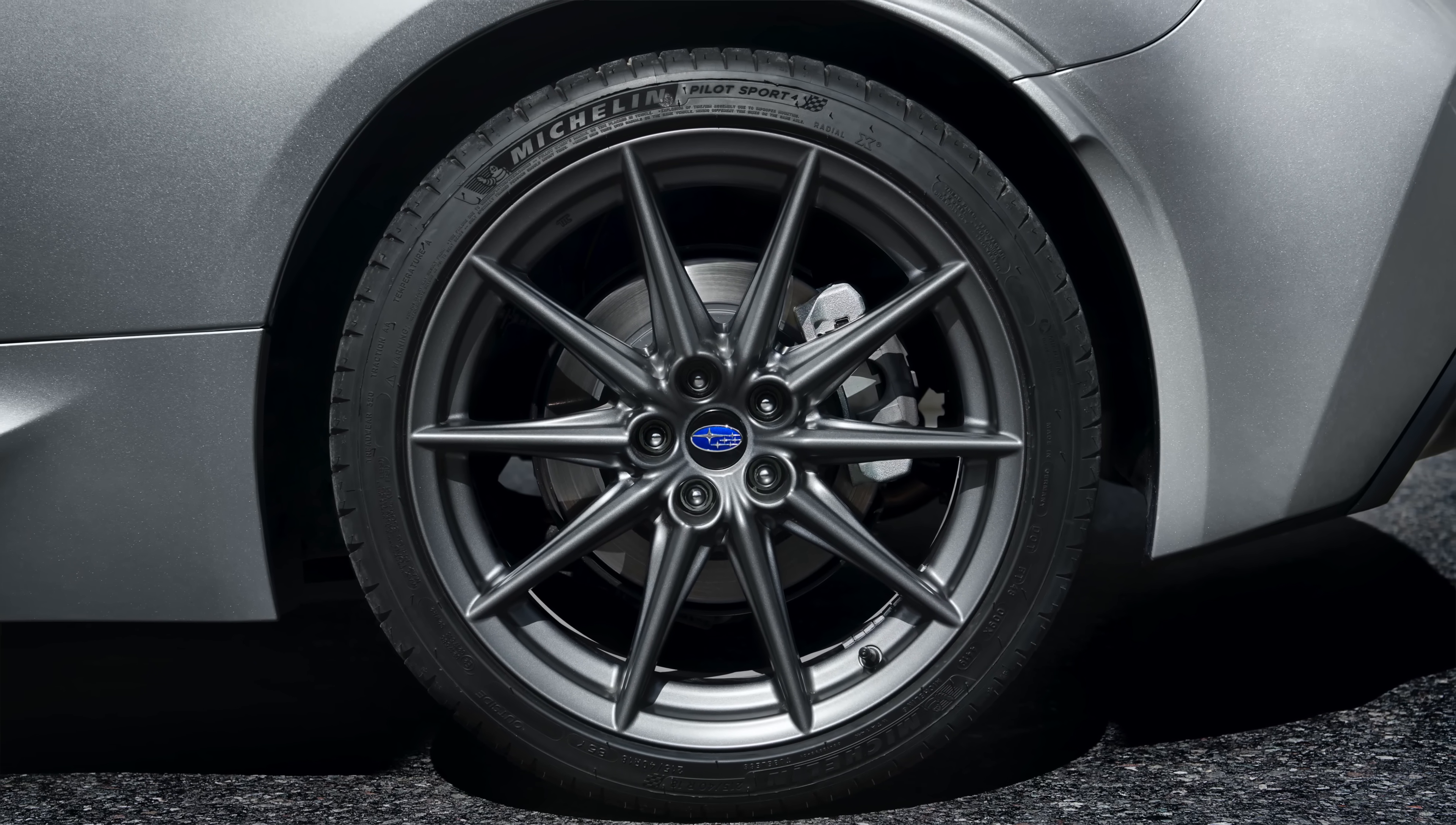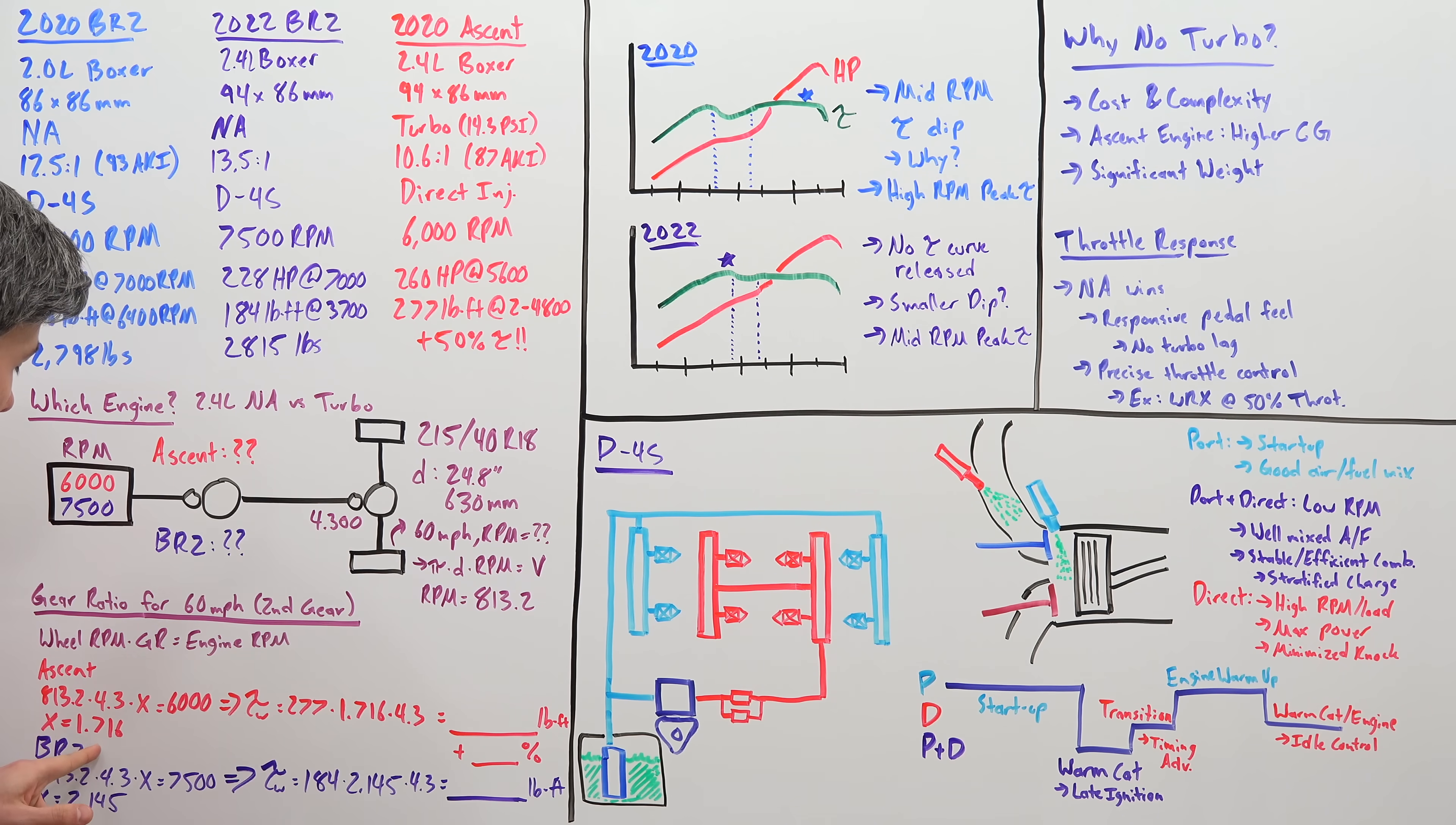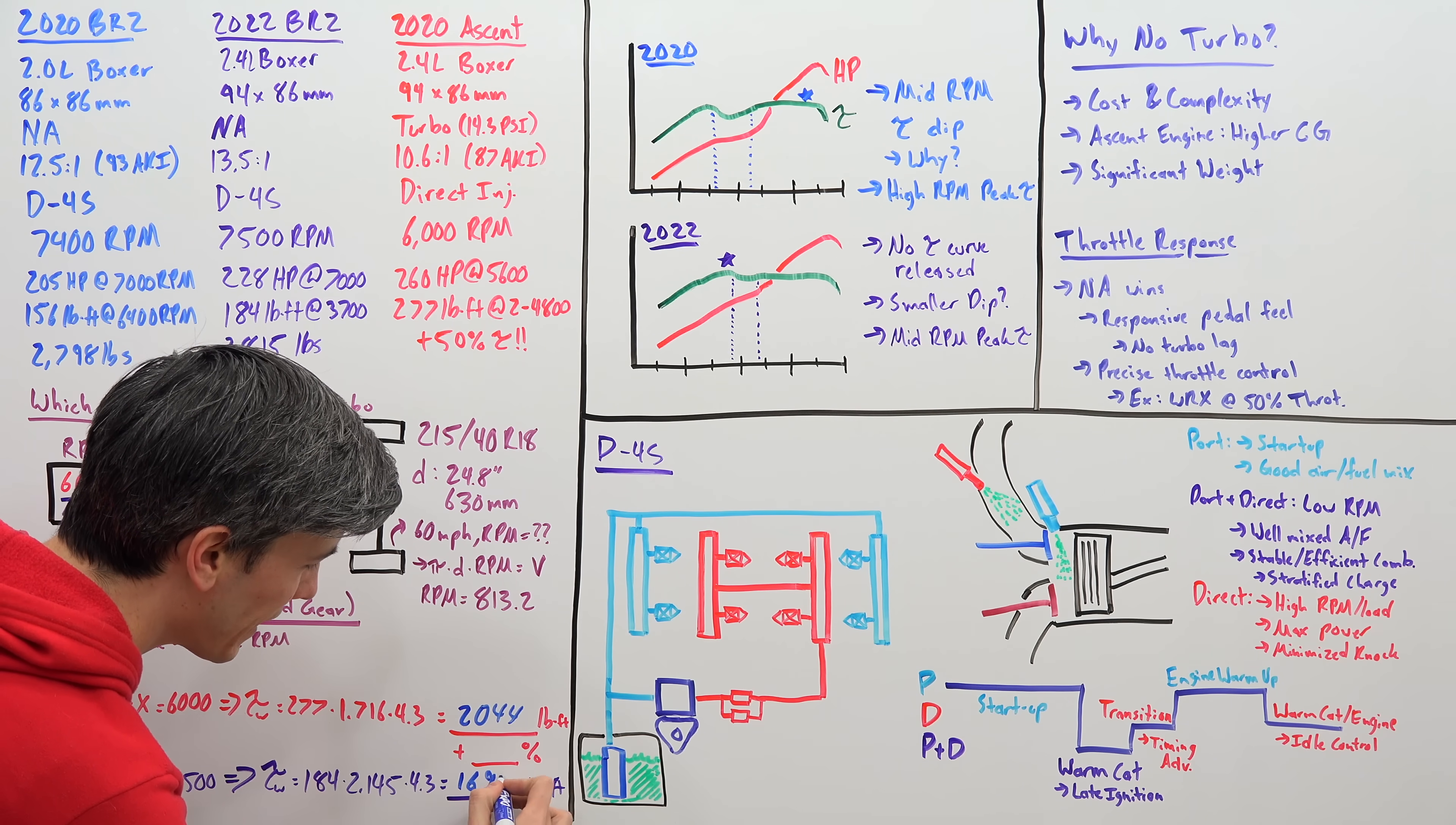Now we want to figure out what is our wheel torque. And so to figure out wheel torque, we take our engine torque and we multiply it by the transmission gear ratio and the final drive gear ratio. So for the ascent engine, what we have is 277 pound feet multiplied by our gear ratio, which we calculated at 1.716, multiplying that by our final drive. And we get a wheel torque of 2044 pound feet. Now if we do the same math for the BRZ, we take our 184 pound feet, multiply that by our gear ratio 2.145, multiply by 4.3, we get 1697.